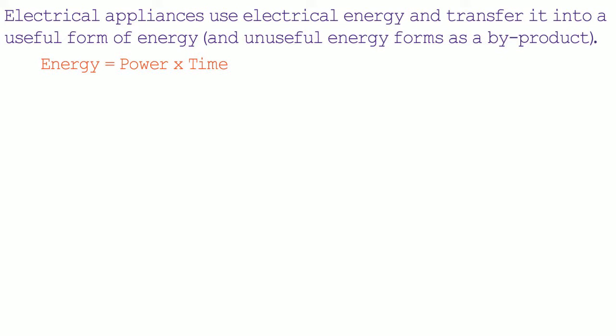Households tend to use a great deal of energy, so we tend to think of power in terms of kilowatts and time in terms of hours. So the standard unit of electrical energy is kilowatt hours — energy in kilowatt hours, power in kilowatts, and time in hours. Alternatively, this formula could also work with energy in joules, power in watts, and time in seconds.